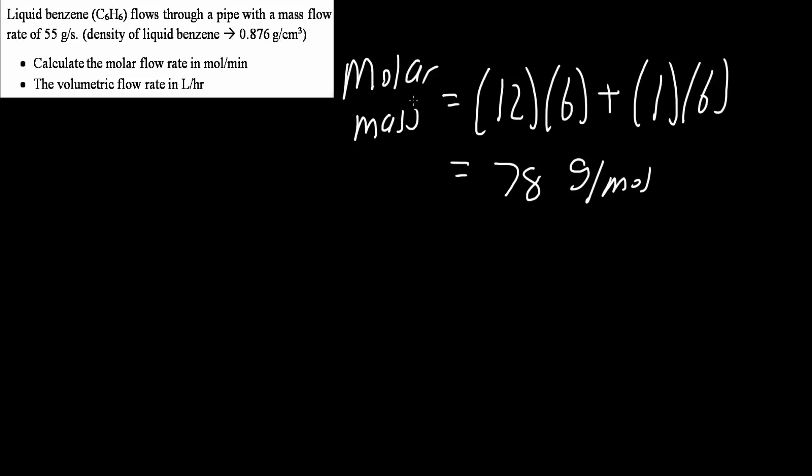The first thing we have to do is get the molar mass. The molar mass of benzene, which is C6H6, is calculated as carbon, 12 times 6, plus hydrogen, 1 times 6. This equals 78 grams per mole. That's the molar mass.